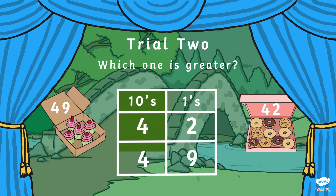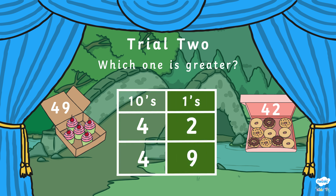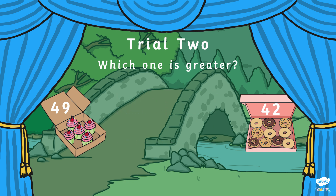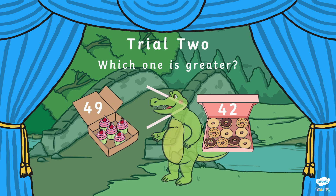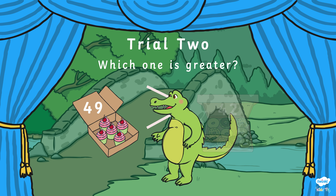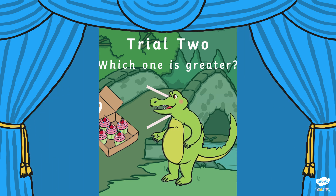Let's start with the tens column. Remember, we always start at the left-hand column when comparing numbers. They are equal, so we use the rule of looking left to right and move on to the ones column. There is 2 and 9. 9 is greater than 2. This means that 49 is greater than 42. We place the arrow this way round. Crock-8 can only eat the greater number, so he eats all the cupcakes!